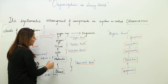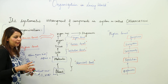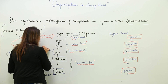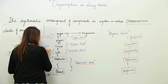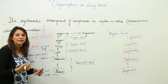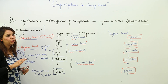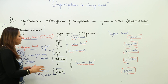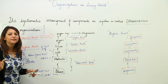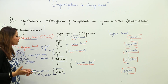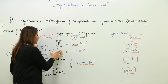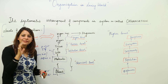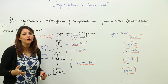Moving on to the higher level, different molecules when combined form the components of cells and give rise to a cell. The cell, as you already know, is the structural and functional unit of life. We have already discussed this in the previous unit. So molecules combine to form the cell, and cells are the structural and functional unit of life.